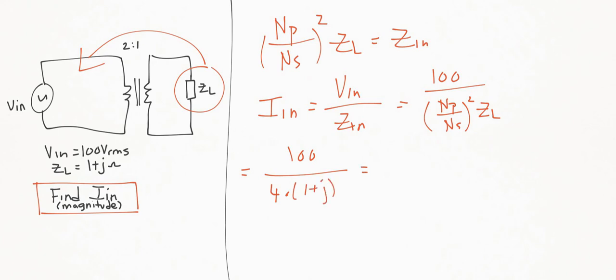Solving for this and ignoring the angle, just getting the magnitude, we get 17.7 amps. And that's it.